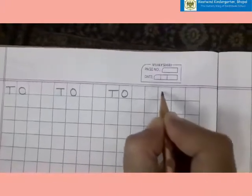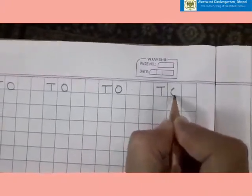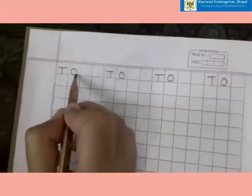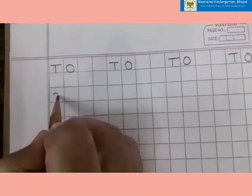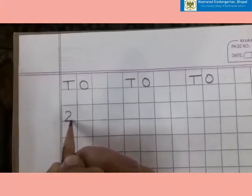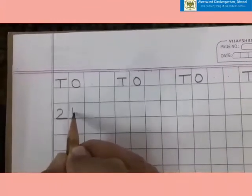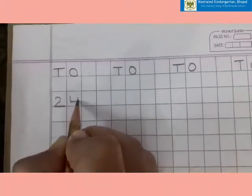I hope you have understood what is T and O. Tens and ones. Yes, you are right. T and O means tens and ones. Leave one box. We will start from here. 2, from the middle of the box, write the bottom line and yes, standing line, slanting line, and one more standing line. 4.